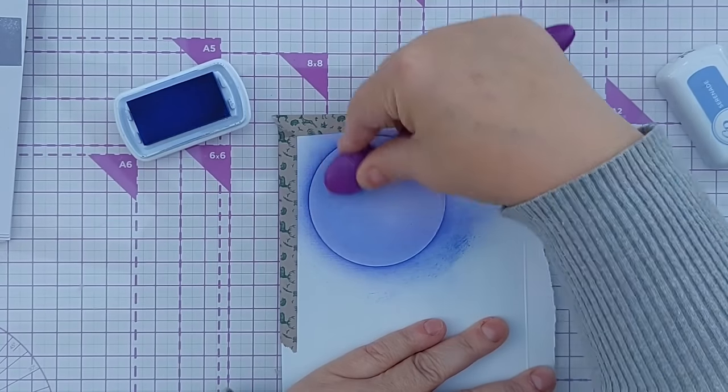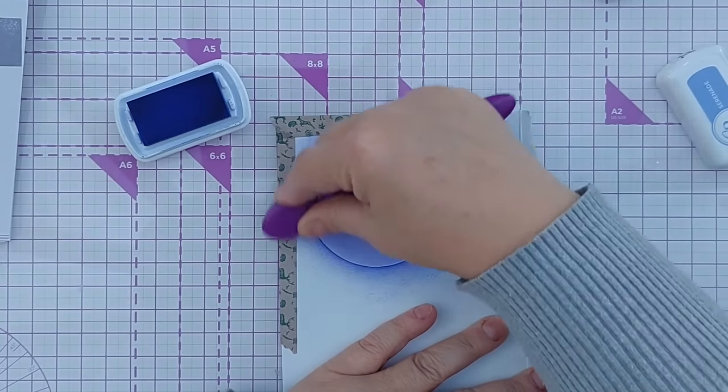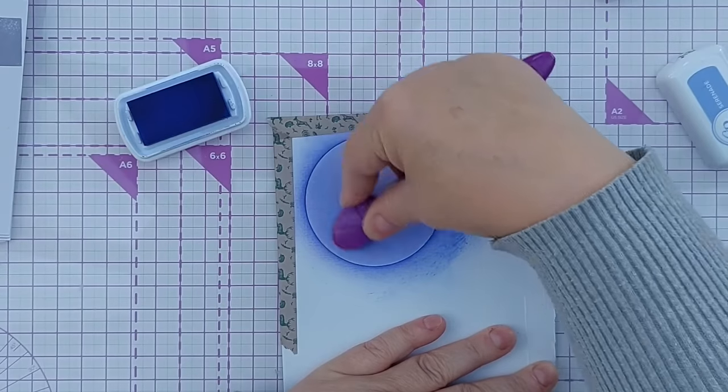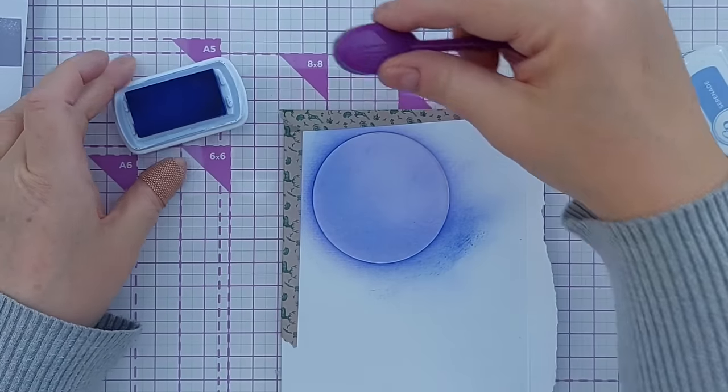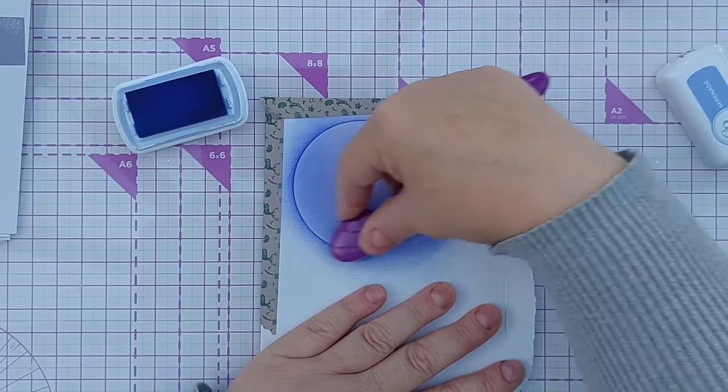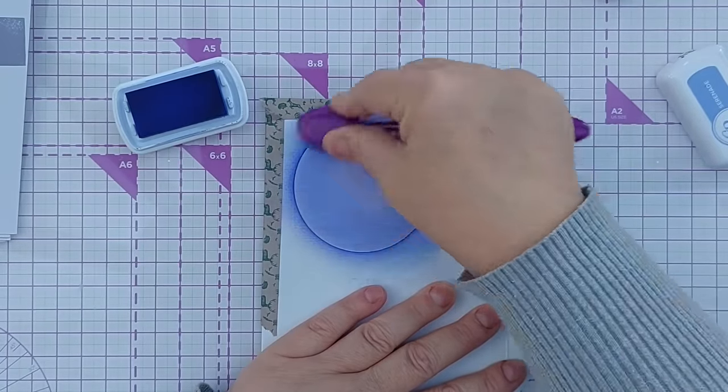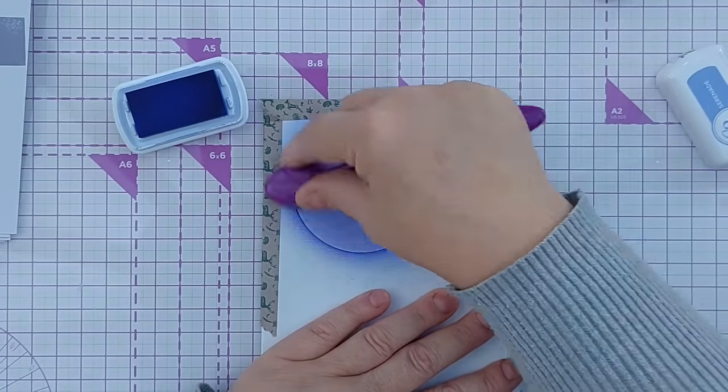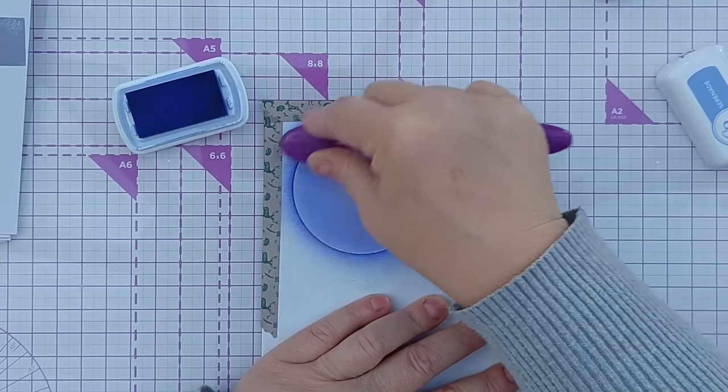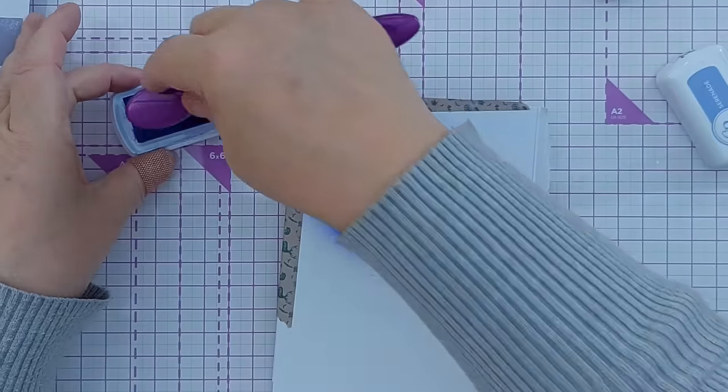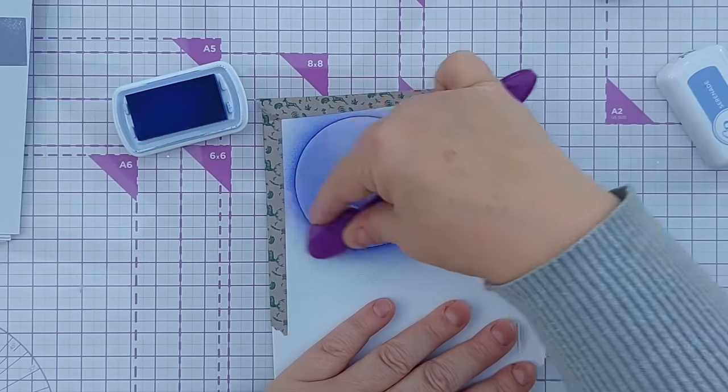I find blending with Distress Oxides a lot quicker but you get a more opaque finish because they're an opaque ink whereas these are dye inks and they've got a transparent nature so it's just about building up gradually, slowly blending the ink on.